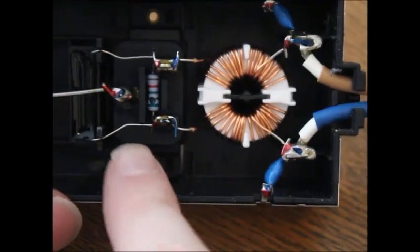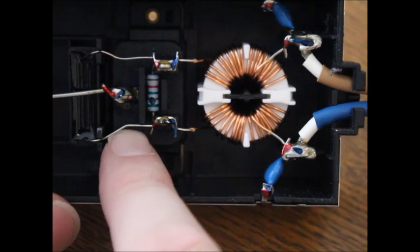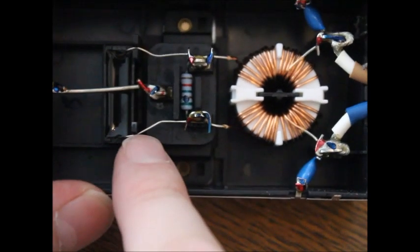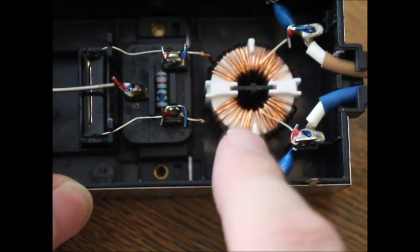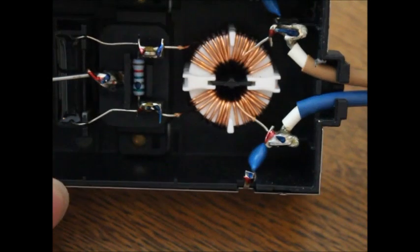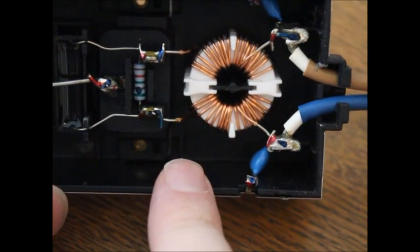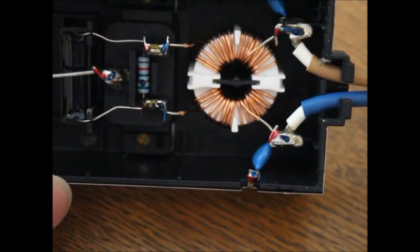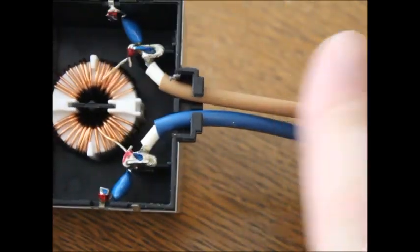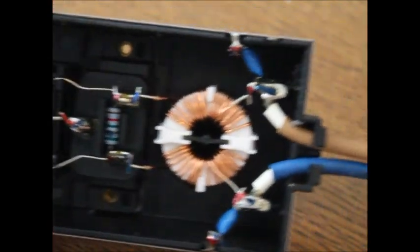This here seems to smooth out the incoming mains a bit. And this thing here seems to just have the job to power this line here slowly. I guess.